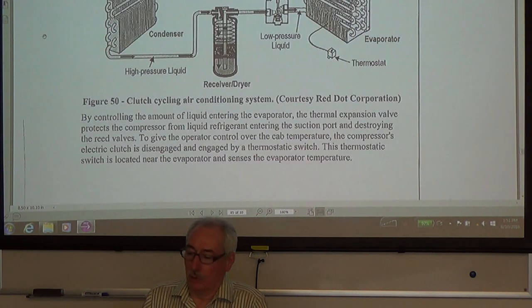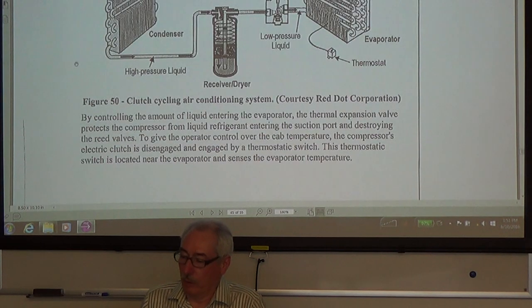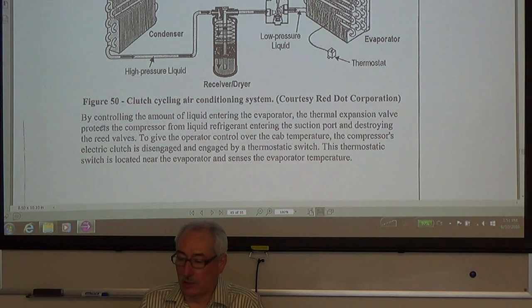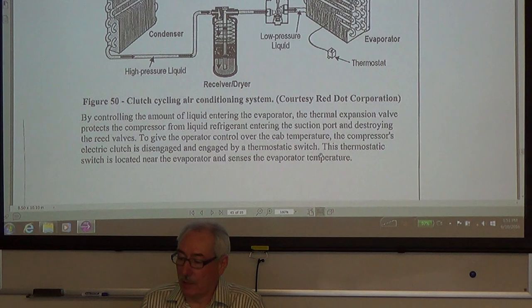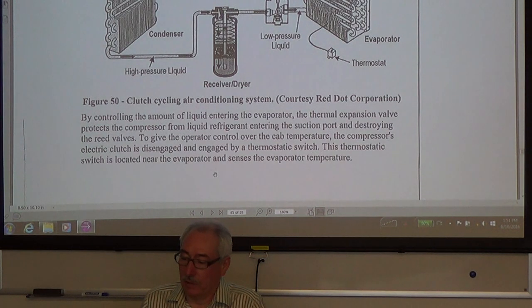By controlling the amount of liquid entering the evaporator, the thermal expansion valve protects the compressor from liquid refrigerant entering the suction port and destroying the reed valves. To give the operator control over the cab temperature, the compressor's electric clutch is disengaged and engaged by a thermostatic switch. This thermostatic switch is located near the evaporator and senses the evaporator temperature.